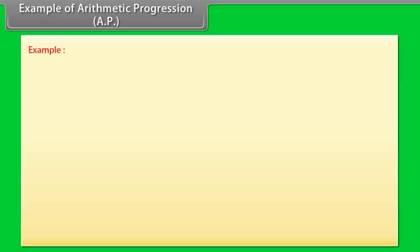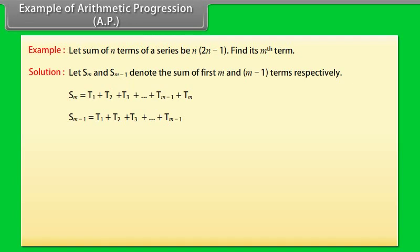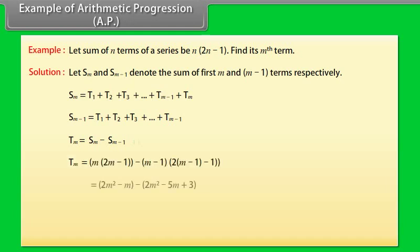Example: Let the sum of N terms of a series be N(2N−1). Find its Mth term. Solution: Let SM and SM−1 denote the sum of the first M and M−1 terms respectively. SM = T1 + T2 + T3 + ... + Tm−1 + Tm; SM−1 = T1 + T2 + T3 + ... + Tm−1. Then Tm = SM − SM−1. On solving, we get Tm = 4M − 3.